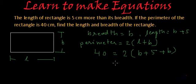So this will be equal to 40 equals 2 times B plus B is 2B plus 5. And now if we open this bracket, we have to multiply the whole bracket by 2.